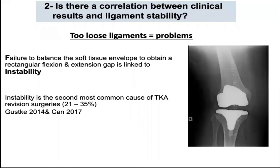Now we'll try to answer our second question: is there a correlation between clinical results and ligament instability? When trying to align the knee using the mechanical axis as a reference, failure to balance the soft tissue envelope to obtain a rectangular flexion and extension gap will lead to instability, which is considered the second most common cause of revision after total knee arthroplasty. In those cases requiring revision, we're talking about marked instability.